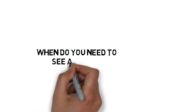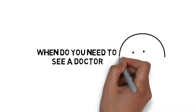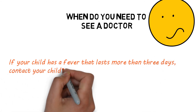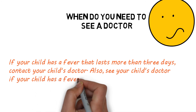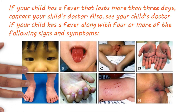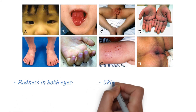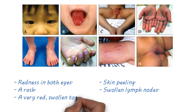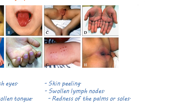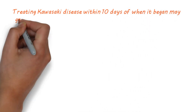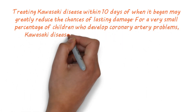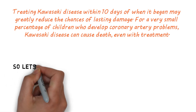When do you need to see a doctor? If your child has a fever that lasts more than three days, contact your child's doctor. Also, see your child's doctor if your child has a fever along with four or more of the following signs and symptoms: redness in both eyes, a very red swollen tongue, redness of the palms or soles, skin peeling, a rash, or swollen lymph nodes. Treating Kawasaki disease within 10 days of when it began may greatly reduce the chances of lasting damage. For a very small percentage of children who develop coronary artery problems, Kawasaki disease can cause death, even with treatment.